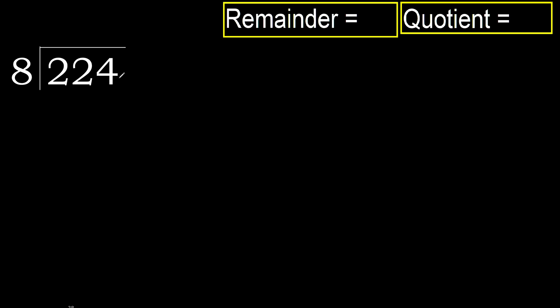224 divided by 8. 2 is less, therefore next. 22 is not less, therefore with 22: 8 multiplied by which number is nearest to 22 but not greater? 8 multiplied by 3 is 24, which is greater. Try multiplied by 2.